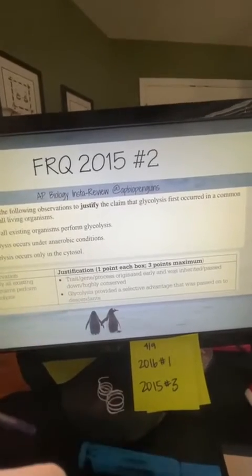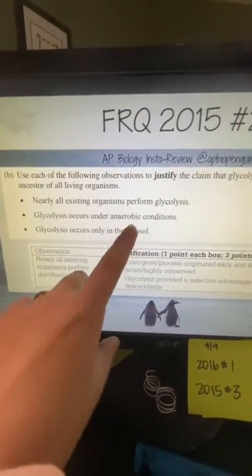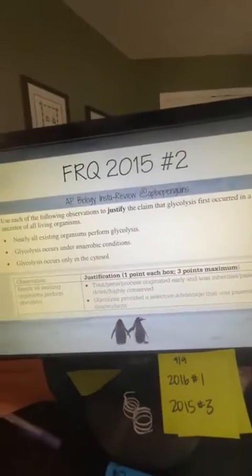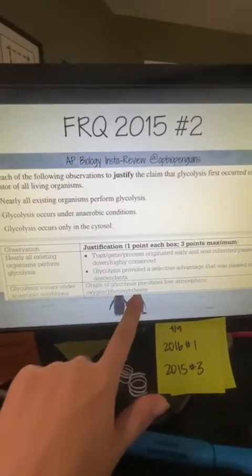The key ideas here are: the trait was inherited and passed down, it is highly conserved, and there was a selective advantage. You only needed one of those points. The second observation: glycolysis occurs under anaerobic conditions — it doesn't require oxygen. This suggests it must have originated before oxygen was present in the atmosphere, meaning it predates atmospheric oxygen.